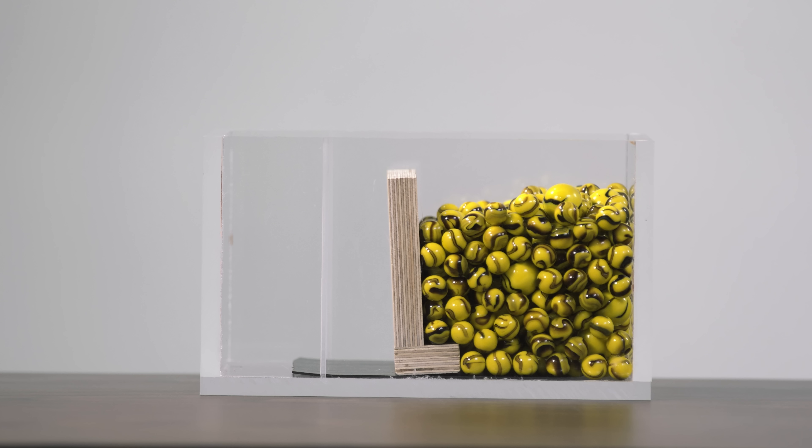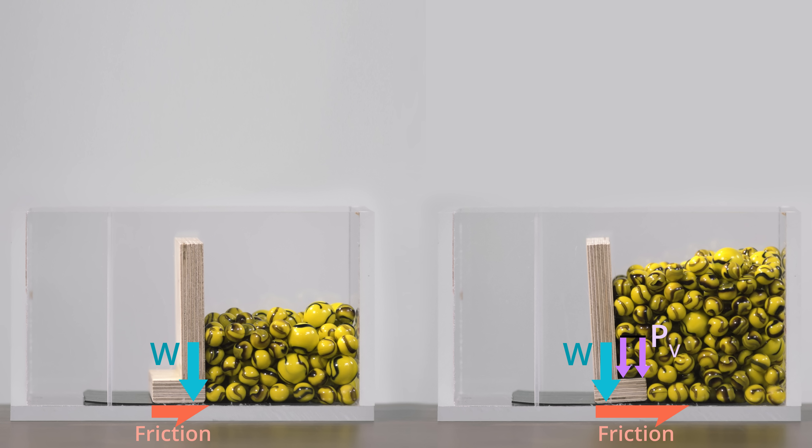When the bottom leg points towards the marbles, the vertical pressure from the marbles helps to keep the wall upright. The downward pressure also increases the friction between the bottom of the wall and the ground, thereby reducing the likelihood of sliding.